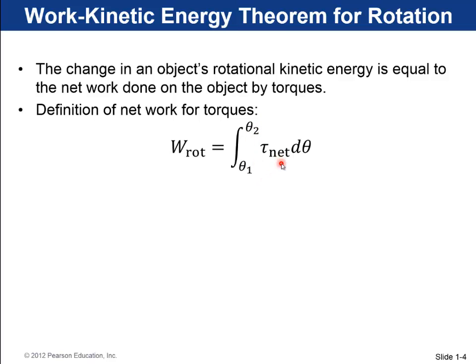So it rotates by this delta theta, which is theta 2 minus theta 1. There's a torque applied to it the whole time. Well, it's going to change its rotational kinetic energy. So this is delta K rotational, which is the one-half I omega 2 squared, the final rotational kinetic energy, minus the initial rotational kinetic energy.